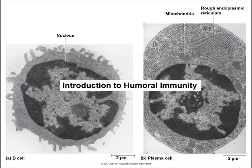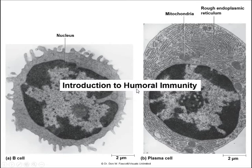Hi, this is Dr. Rhonda Falheim. We're going to be taking a look now at humoral immunity, which is the second type of adaptive immunity. The other one that we talked about was cell-mediated immunity. This is humoral immunity.